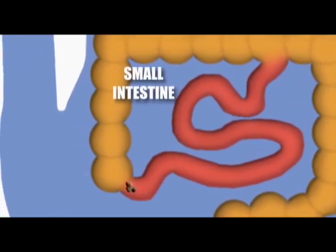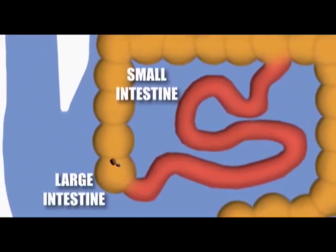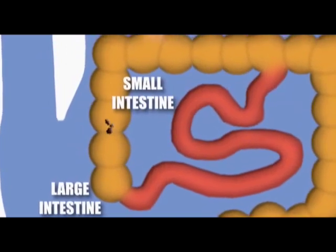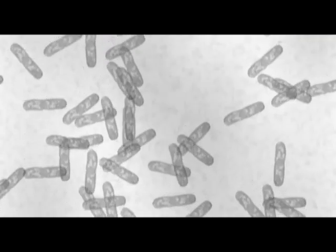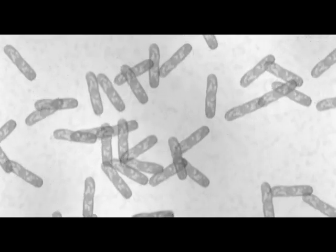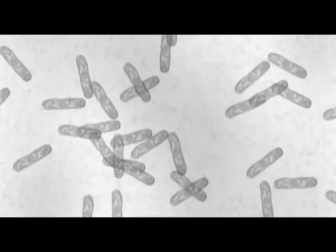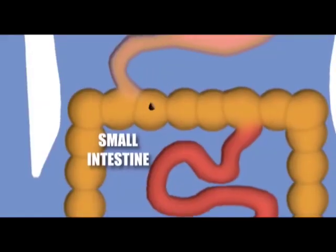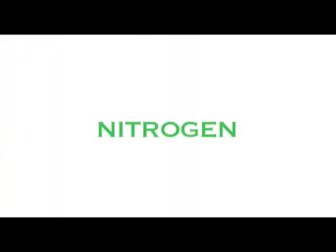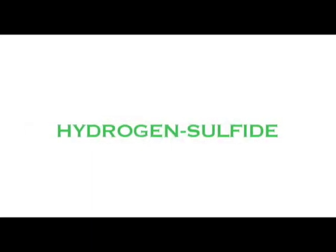Food will remain in the large intestine longer than at any other stage in the digestive process. It is here that billions of bacteria begin to digest those nutrients that were not already digested. The bacterial activity that takes place in the large intestine can produce numerous gases, including nitrogen, carbon dioxide, oxygen, methane, and hydrogen sulfide.